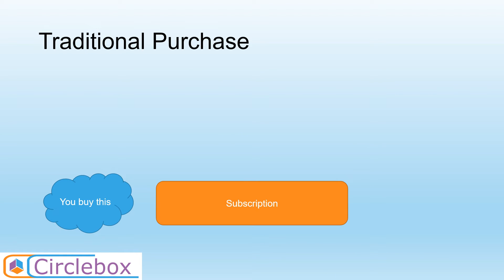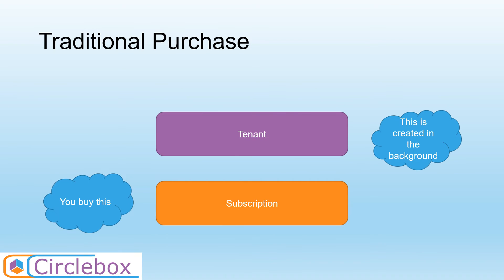The reason this was confusing to me had to do with the fact that when you first start using Azure, you don't buy a tenant — you buy a subscription, which means you're not starting at the top of the hierarchy. If you accept an offer to start a new Azure account, you're actually setting up a new subscription, but a subscription has to belong to a tenant. So an Azure tenant is automatically created in the background for you to be the parent of your new subscription. Once your initial subscription and tenant are set up and you log into portal.azure.com with your administrator account, you can add additional subscriptions to your tenant. It's just the initial subscription purchase that's a little confusing until you understand the relationship.